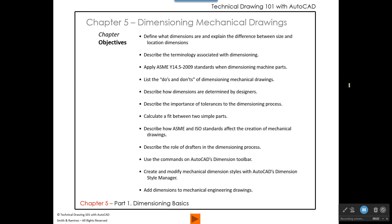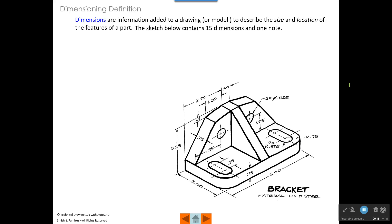In this video, I want to talk about the basics of dimensioning mechanical drawings. Dimensions are information that's added to a drawing or even a 3D model to describe the size and location of the features of a part. The sketch below contains 15 dimensions and one note. The note is right here. It tells us what the material is, and then we have about 15 size and location dimensions on this sketch.